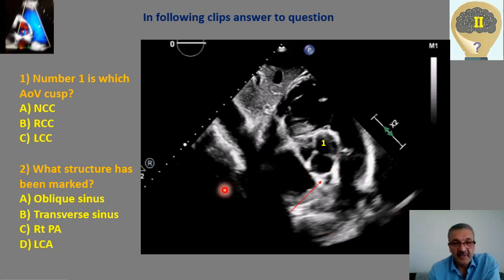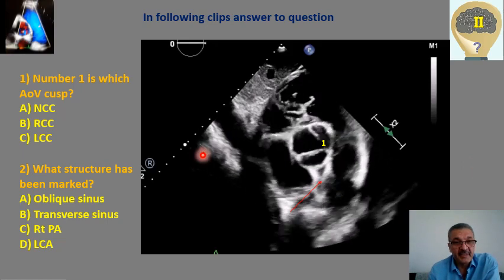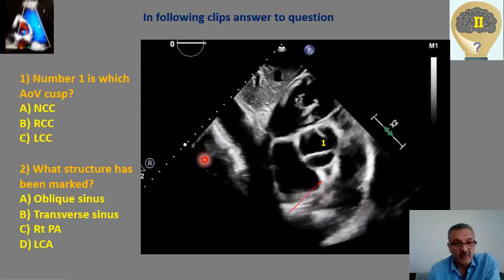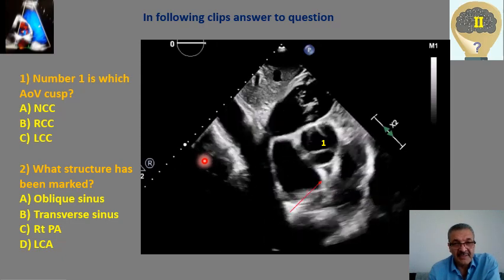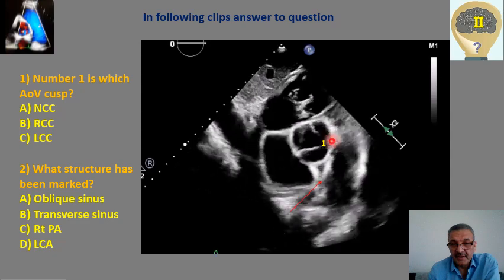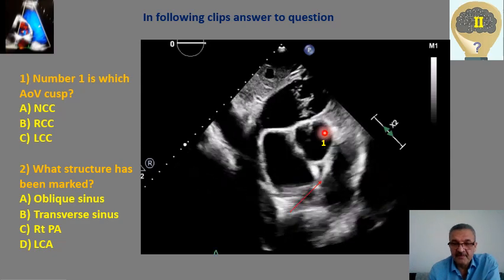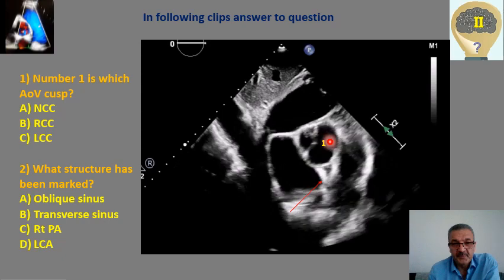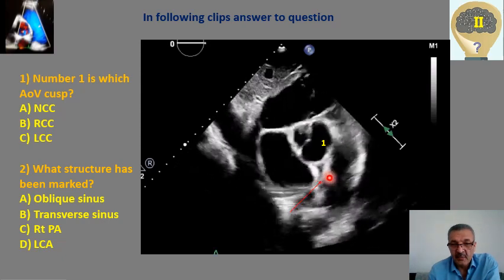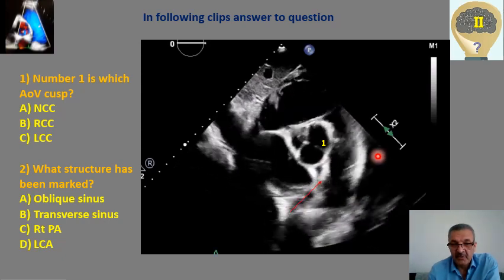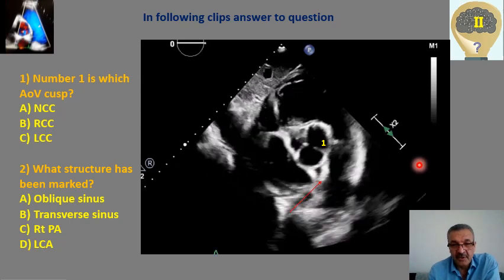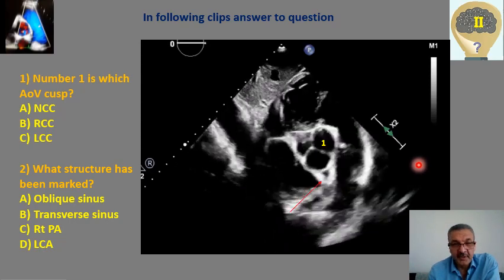The following image or clip has been taken. What window is this? Second, what is this structure — this cusp? Which one is it? Third, what is this triangular hypoechoic or anechoic structure? And what is its name?